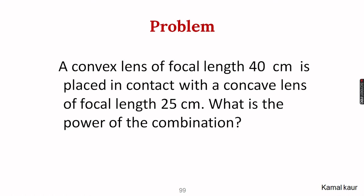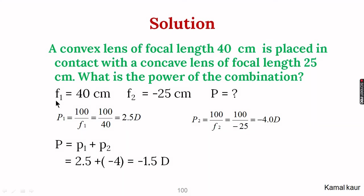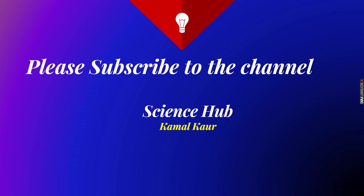Problem: A convex lens of focal length 40 cm is placed in contact with a concave lens of focal length 25 cm. Note: focal lengths are given, and combined focal length is not simply the sum of individual focal lengths — you must first find individual powers. P1 = 100/40 = +2.5 D, P2 = 100/(−25) = −4 D. Combined power = 2.5 + (−4) = −1.5 D. With this we have completed reflection and refraction in detail.